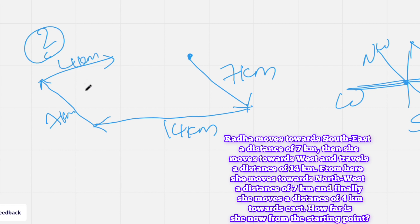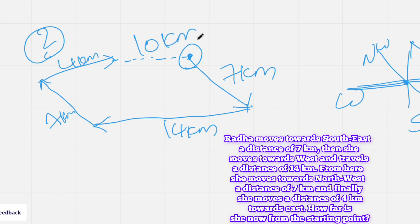Draw all these measurements accurately and calculate the result. The question asks how far she is from the starting position. Tracing the diagram, she is 10 kilometers from the starting position. That is how you make a conclusion and solve the problem. Just draw the diagram clearly for your own understanding and then solve the question.